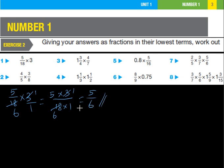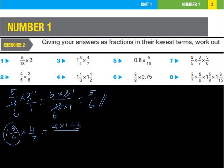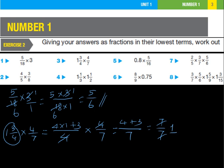The second one is 1¾ × 4/7. To solve this we must convert the mixed fraction into an improper fraction. We multiply 4×1 and add 3, giving (4+3)/4 = 7/4. So the calculation becomes 7/4 × 4/7. We can cancel the 4s and the 7s — 7÷7=1, 4÷4=1. The answer is 1 for the second subdivision.